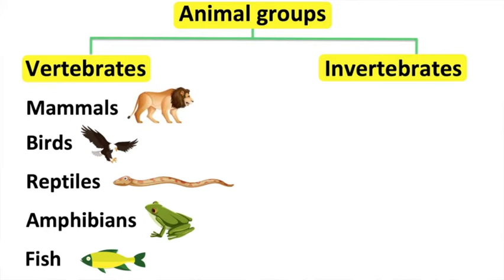Mammals have body hair or fur. They use their lungs to breathe. Mammals are born live and they drink milk. A mammal's body temperature is usually stable; therefore, they are warm-blooded animals.